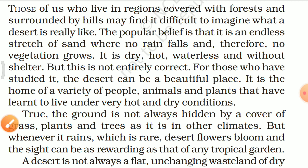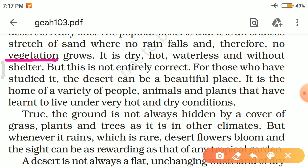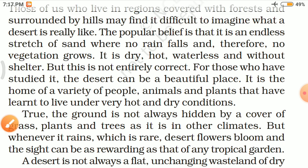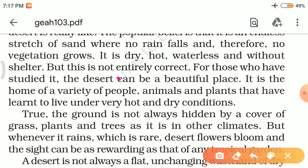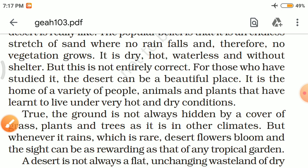Vegetation means plants considered collectively, especially those found in a particular area or habitat. So some people think a desert is an endless stretch of sand with no rain and no vegetation — dry, hot, waterless, and without shelter. But this is not entirely correct; entirely means completely.